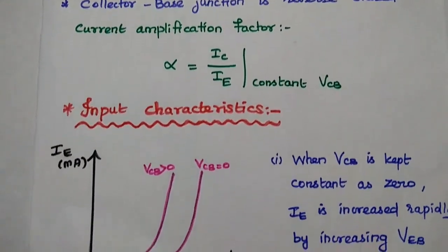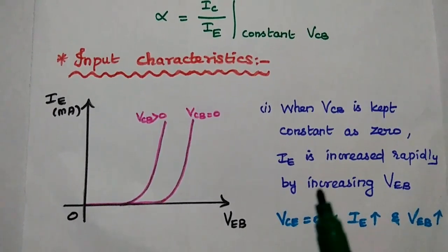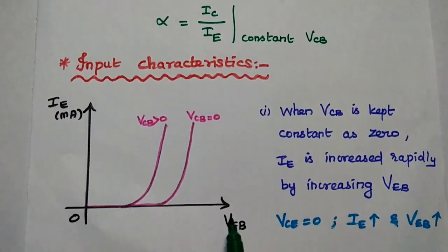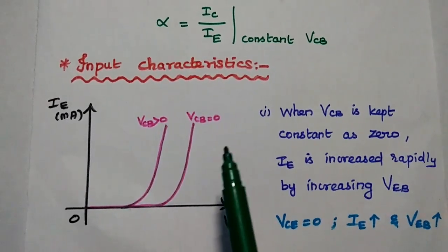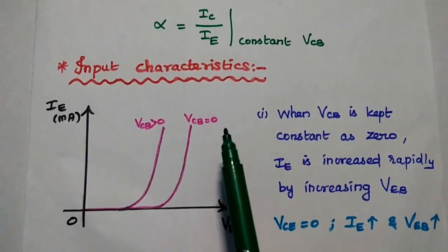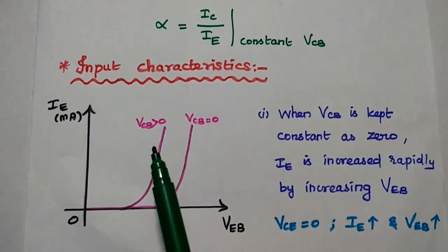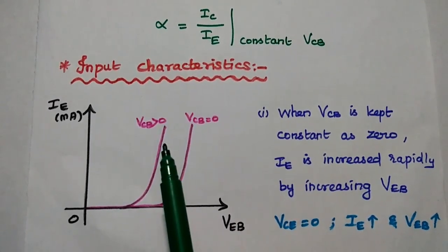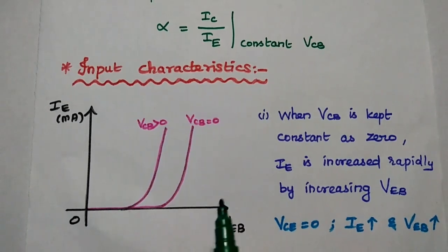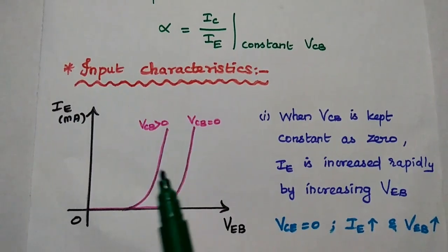Next, we are going to discuss the input characteristics of CB configuration. In these characteristics, we analyze the input current versus input voltage with the condition VCB kept constant. VCB means output voltage. When VCB is kept constant at zero, the emitter current increases rapidly by increasing the input voltage. Here we are going to increase the forward bias — if forward bias is increased, the input voltage increases and the current also increases faster.